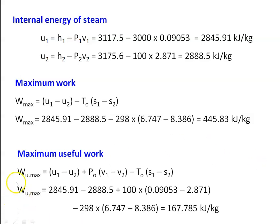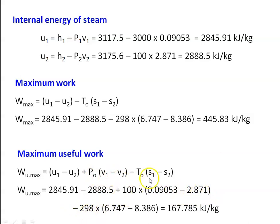Maximum useful work: Wu max equal to U1 minus U2 plus P0 into V1 minus V2 minus T0 into S1 minus S2. Substituting: 2845.91 minus 2888.5 plus 100 into 0.09053 minus 2.871 minus 298 into 6.747 minus 8.386 equal to 167.785 kilojoules per kilogram. So the maximum work equals 445.83 and maximum useful work equals 167.785 kilojoules per kilogram.